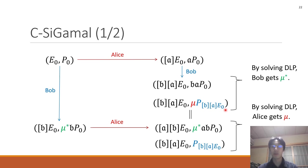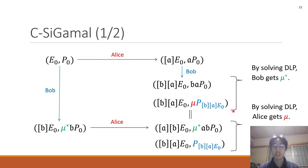Alice and Bob publicly share the algorithm that generates this point. There are many such algorithms. For example, an algorithm which outputs the point with the smallest x-coordinate among points meeting the conditions. And by solving this discrete logarithm problem, Bob gets μ*. By this computation, Bob compresses the information of this set to μ*. And Bob computes the multiplication of μ* and B*P0.